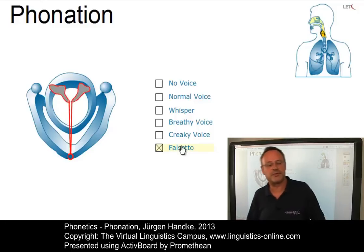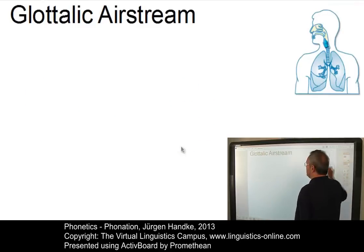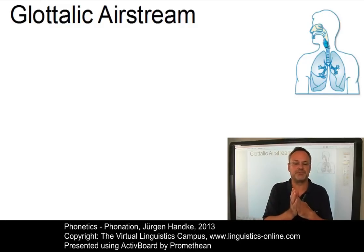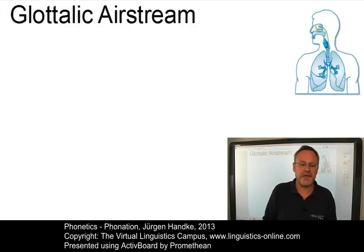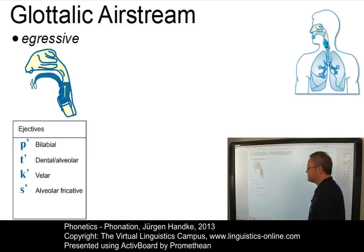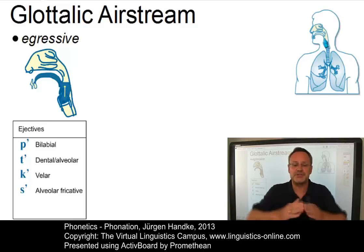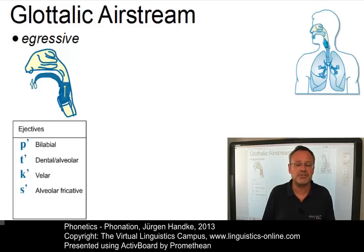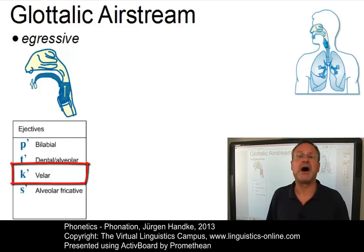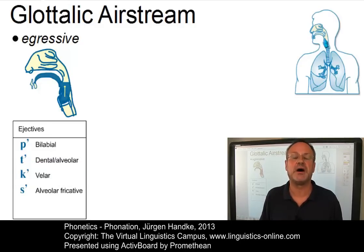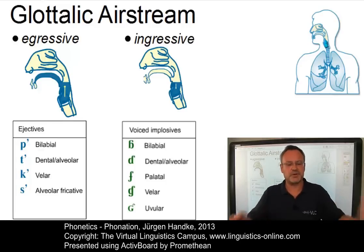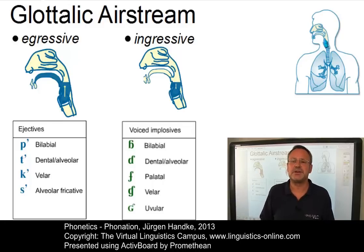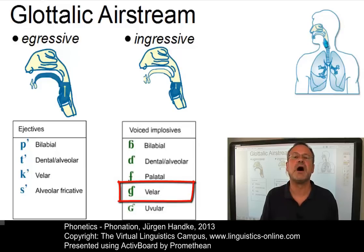Apart from phonation, the larynx is also involved in the production of a particular airstream — the so-called glottalic airstream. This airstream involves the closure of the glottis, a so-called glottal closure, while at the same time a closure is produced somewhere in the vocal tract. There are two variants. If the larynx is moved upward during these two closures and the oral closure is released, the result is a so-called ejective consonant. The second variant, glottalic ingressive, results when the larynx is lowered and the oral closure is released, producing an implosive sound.